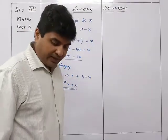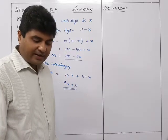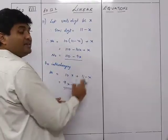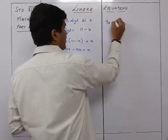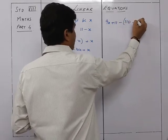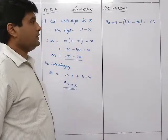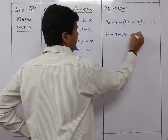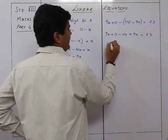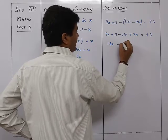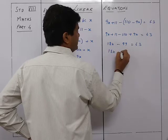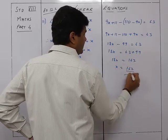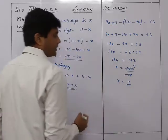It is given that the resulting number after interchanging is greater than the original by 63. So: (9x + 11) minus (110 minus 9x) = 63. Opening the brackets: 9x + 11 minus 110 plus 9x = 63, giving 18x minus 99 = 63, so 18x = 162.